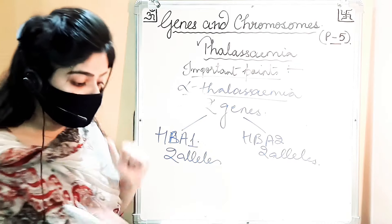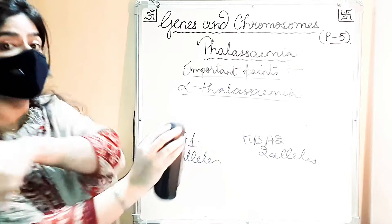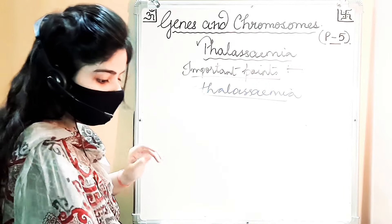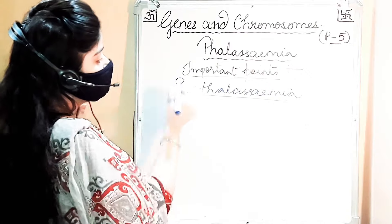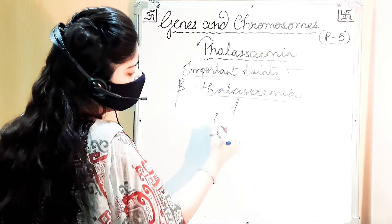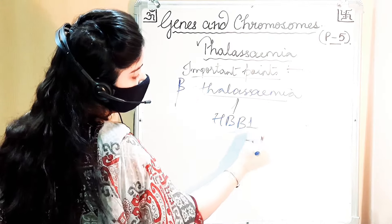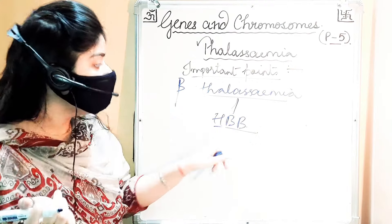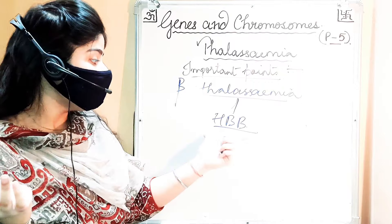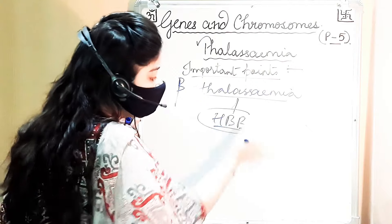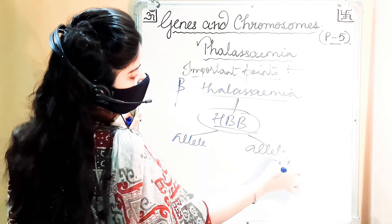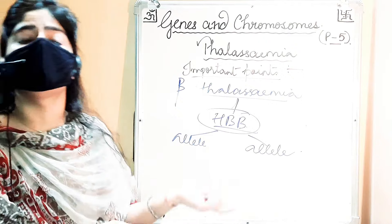Beta thalassemia is controlled by just one gene, HbB — hemoglobin beta. Since it is one gene, there are two alleles — one dominant and one recessive.